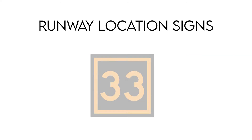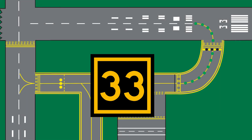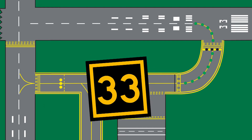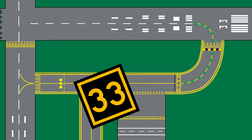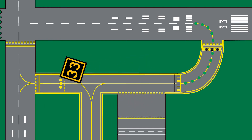Runway location signs also have a black background with yellow text and a yellow border, showing the designation of the runway on which the aircraft is located. These signs are intended to complement the information available through the magnetic compass, and are typically installed where the proximity of two or more runways to one another could cause pilots to be confused as to which runway they are on.